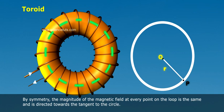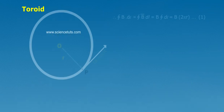By symmetry, the magnitude of the magnetic field at every point on the loop is the same and is directed towards the tangent to the circle.